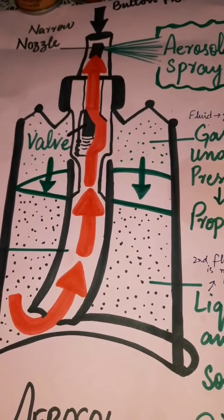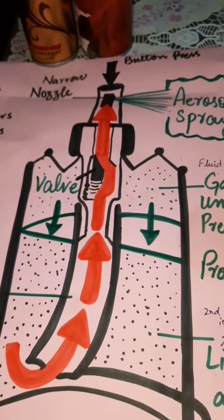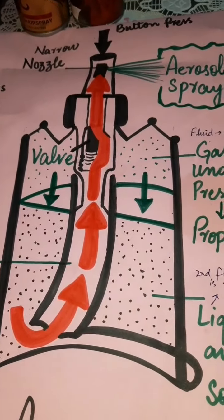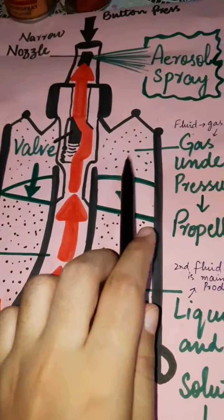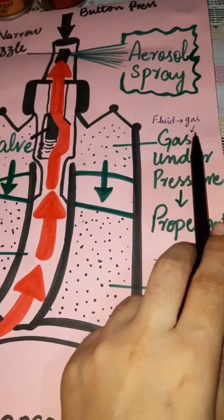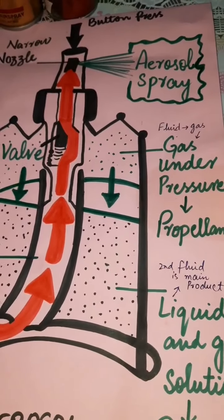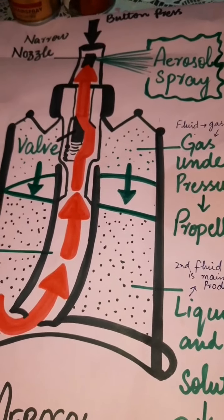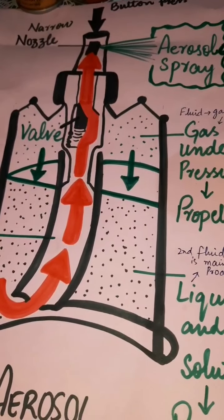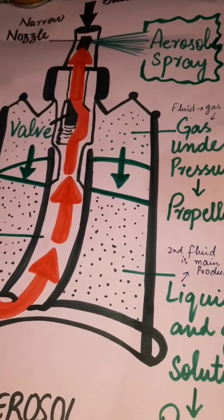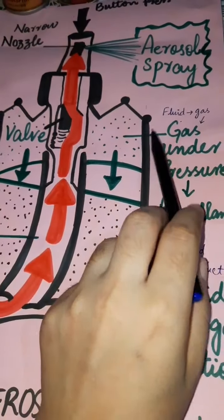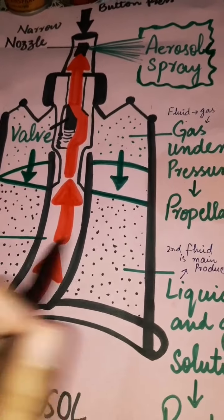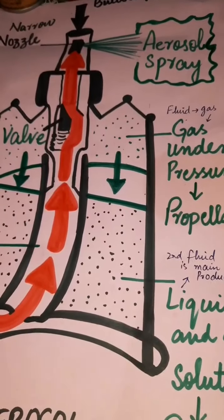In the aerosol bottle we have two types of fluids. The first fluid is in the upper region — that fluid changes into a gas and vapor. Let's suppose our room temperature is 25 degrees Celsius; this fluid changes its state from liquid to gas before 25 degrees Celsius.